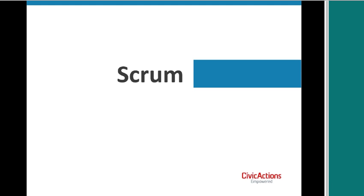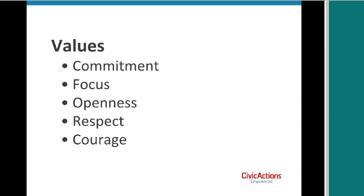Scrum is based on five values. If your team is working with these values, you're fine, no matter what practices you're doing. It's the practices of Scrum that get you to these values. Commitment is the team committing to doing the work at hand. Focus is about focusing on the most important thing and not being distracted. Openness is openness to input from each other. Respect is respecting each other so that you can collaborate. And courage is about saying things like they are — pointing out problems, admitting them, and addressing them.